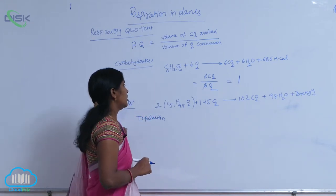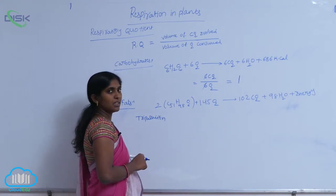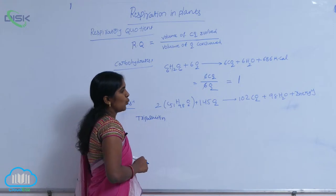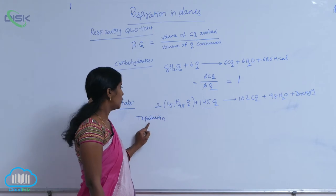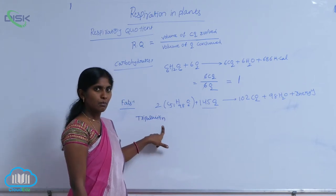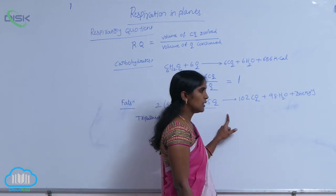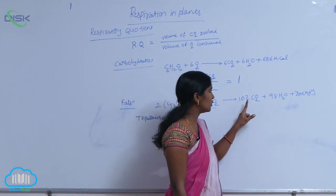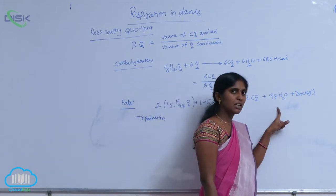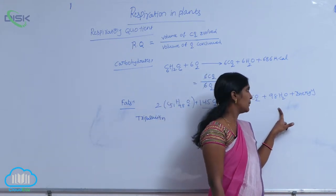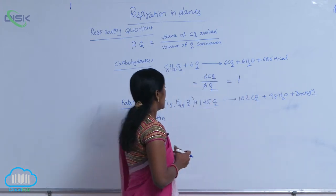Here, 2C51H98O6 that represented as tripalmitin, 145O2 molecules are required for 2 tripalmitin molecules oxidation that resulted to 102 carbon dioxide molecule release as well as 98 molecules of water and energy also produced.